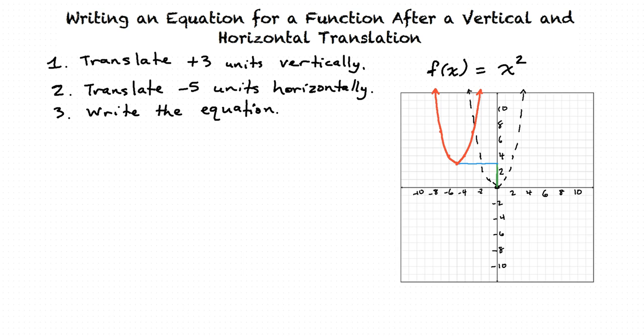We'll start with the vertical translation. When we translate a graph vertically, the equation is written as f of x plus or minus a, where a is the number of units translated vertically. From this information, what would be our function now after the vertical translation?